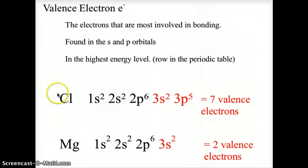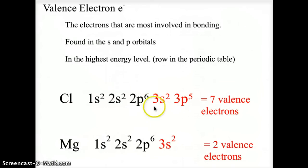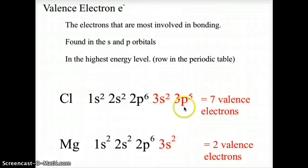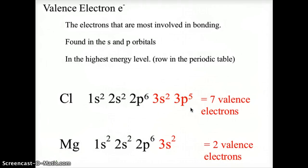If we do the electron configuration for chlorine: 1s2, 2s2, 2p6, 3s2, 3p5. We look at the highest energy level, which would be the third energy level, and we look at the s and p orbitals, and we see that chlorine has seven valence electrons.